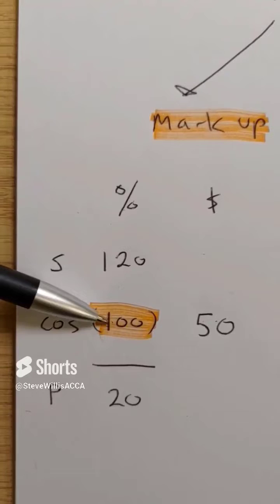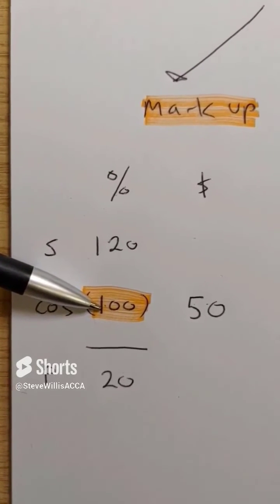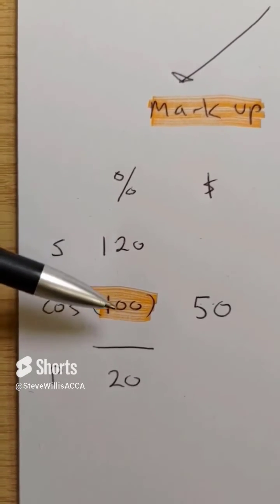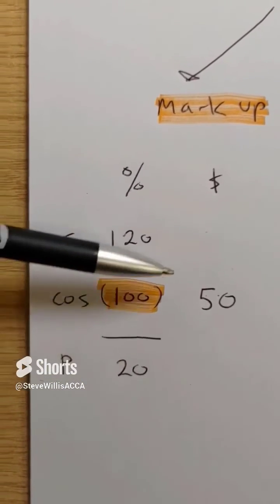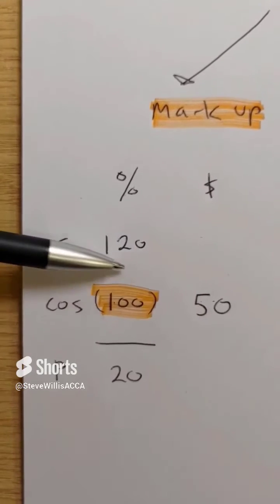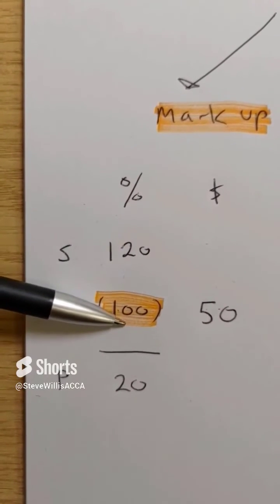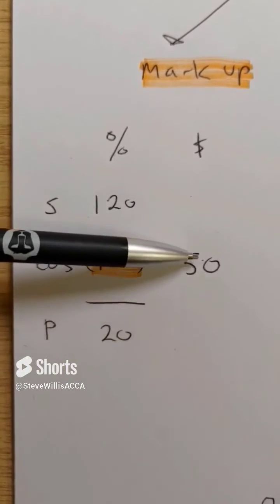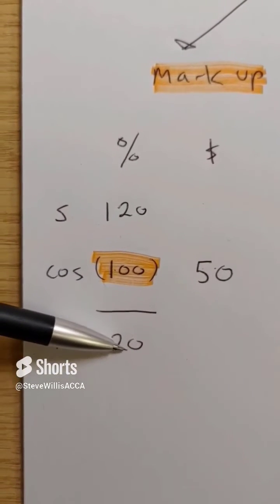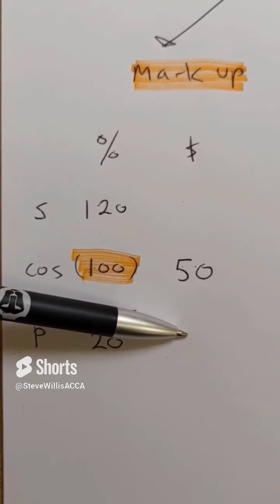You put 100% at cost of sales for the markup. Add the markup, 20. Profit would be one less the other. So the selling price would be 50 times 120 divided by 100, or 60. The profit would be 50 times 20 divided by 100, or 10.